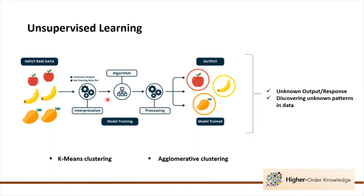Then we apply an algorithm that can help us group or find unknown patterns in the data, such as k-means or agglomerative clustering. This is basically the model training step where we fit and predict our model. Then we obtain our output, which is going to be the groups or subgroups of our data, each related to specific characteristics or patterns that the algorithm found.